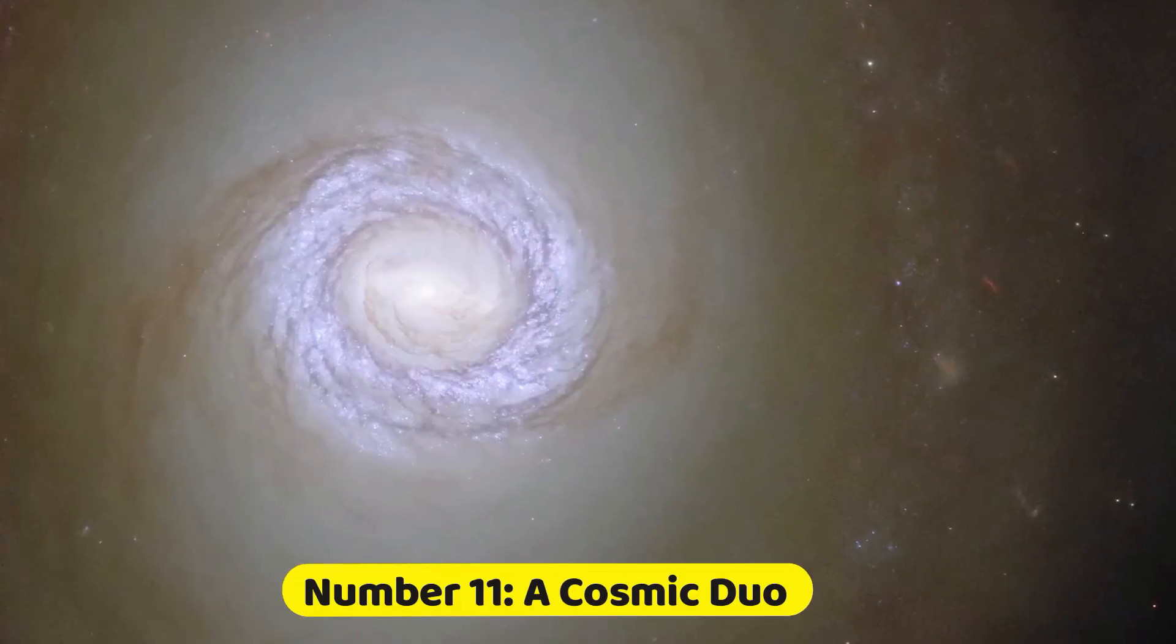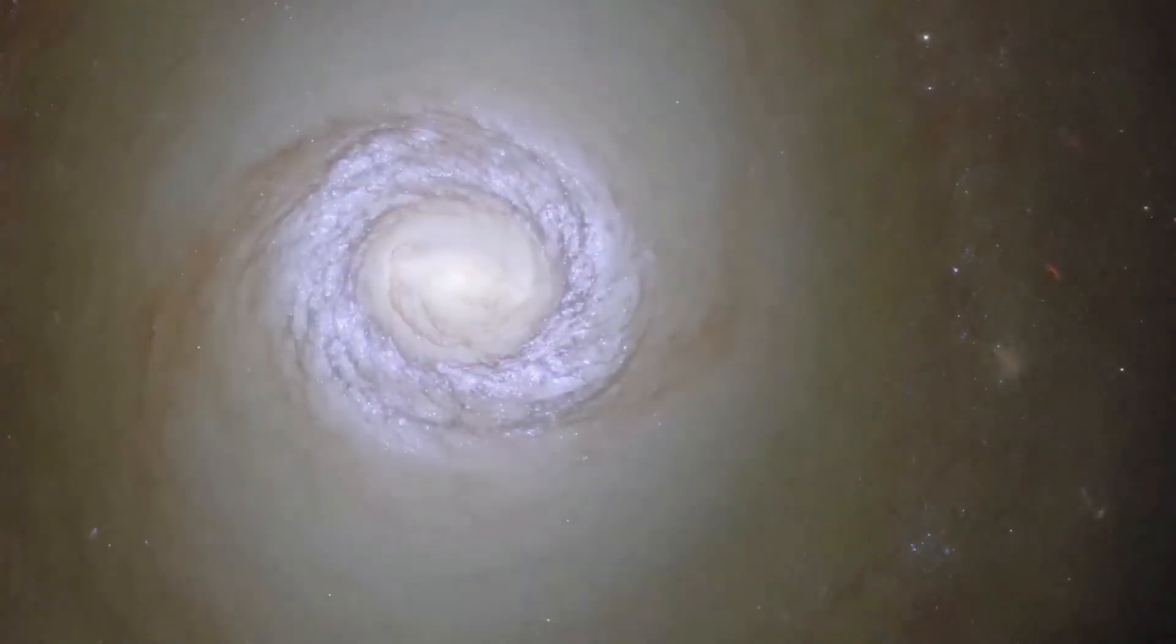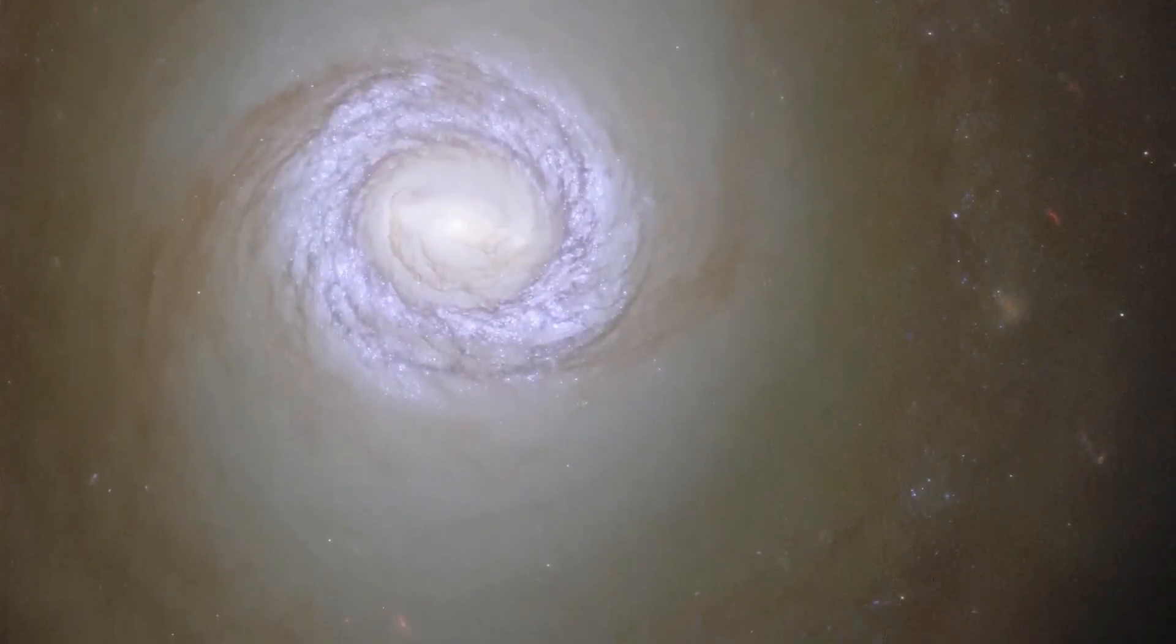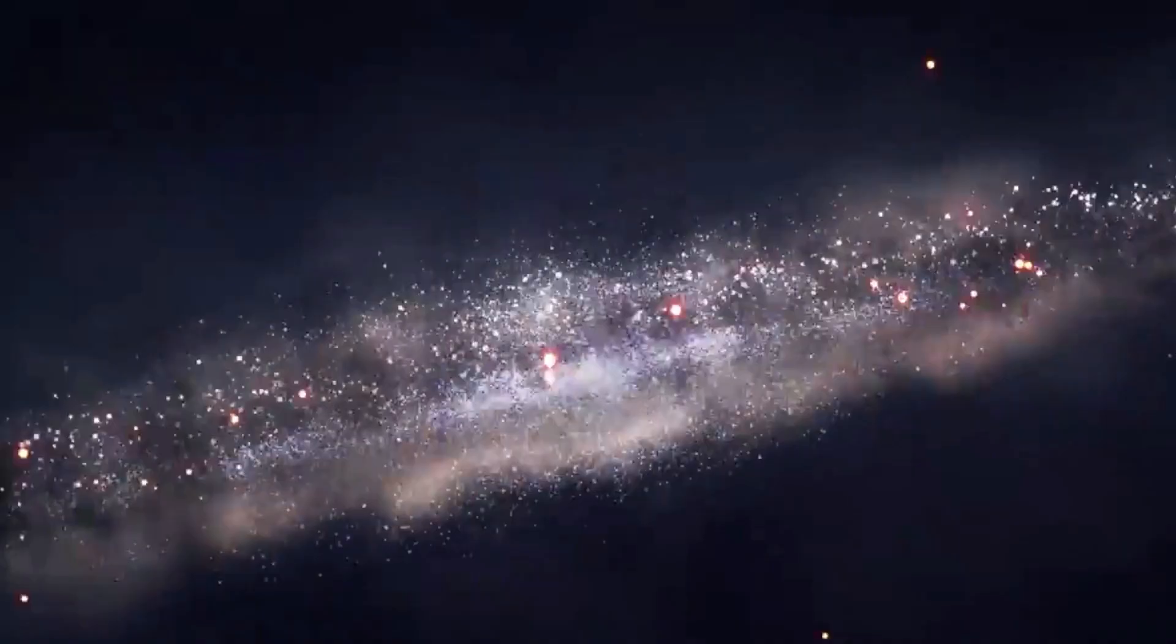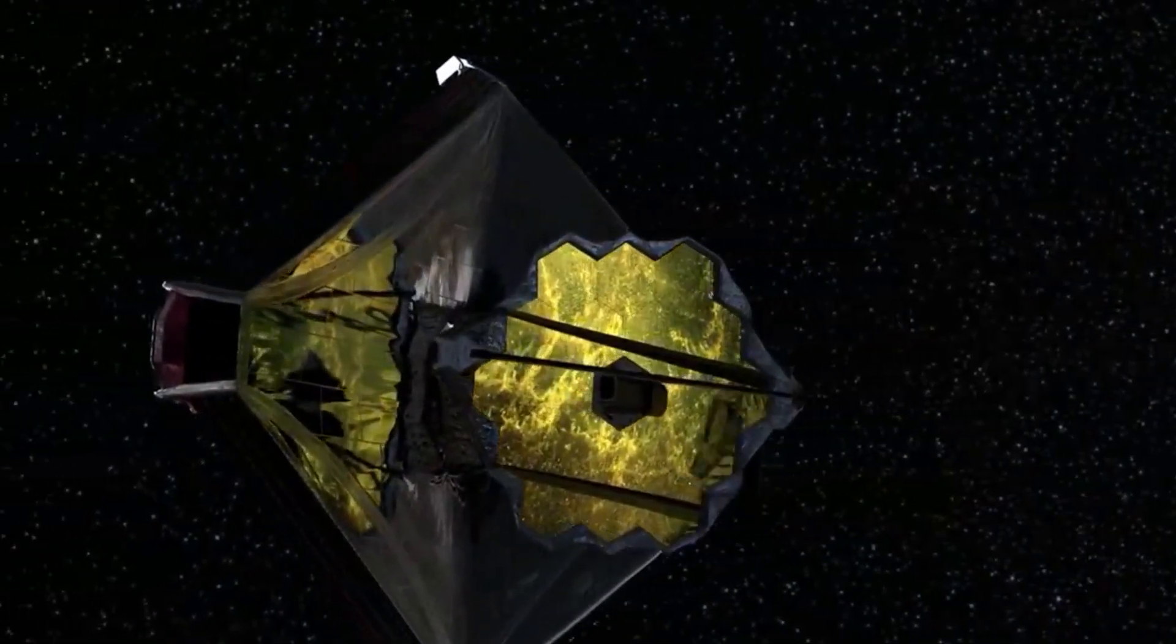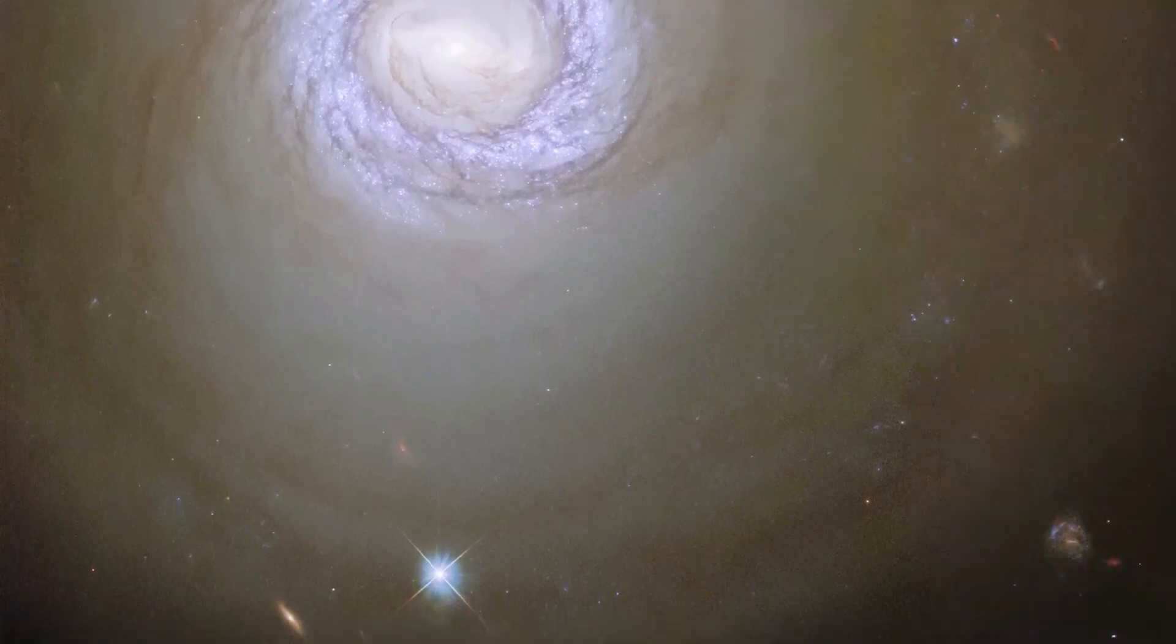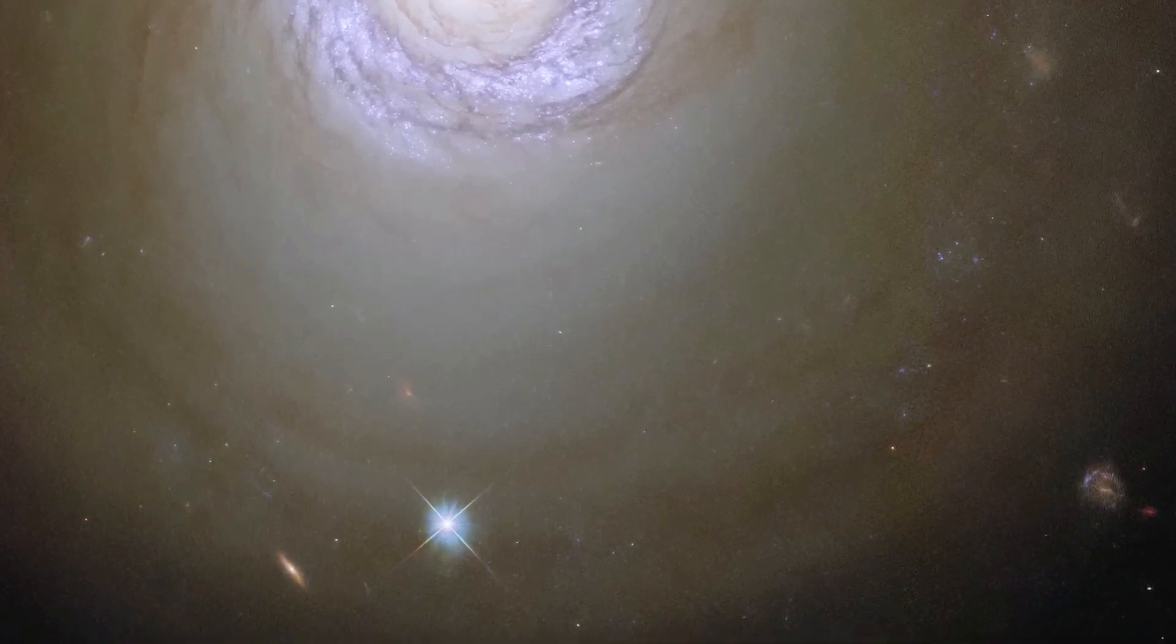Number 11. A Cosmic Dew. The NASA James Webb Space Telescope captured this image of the spiral galaxy NGC 1317, located in the constellation Fornax and over 50 million light-years away from Earth. In this image, NGC 1317 is accompanied by two objects from vastly different regions of the universe, despite the absence of its neighboring galaxy.